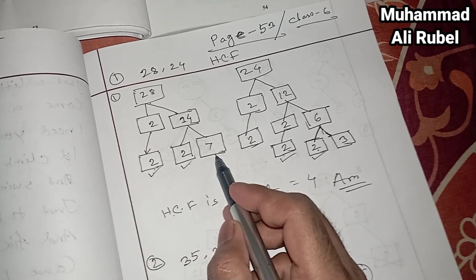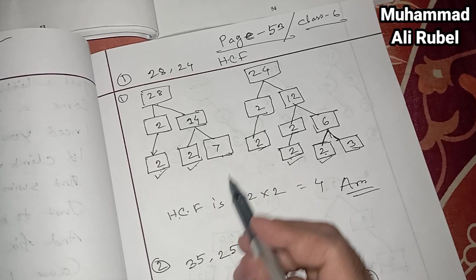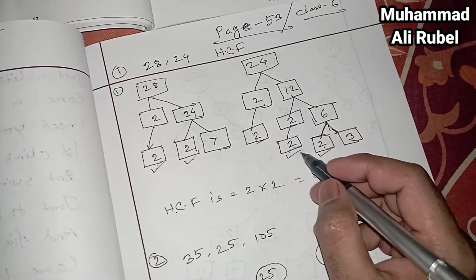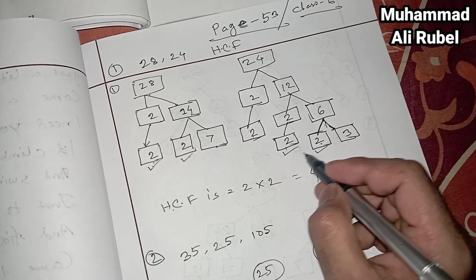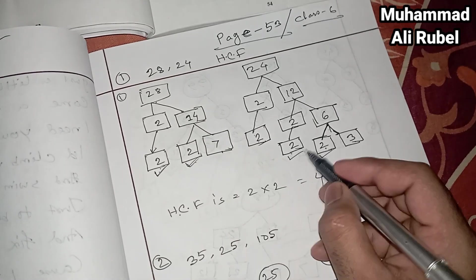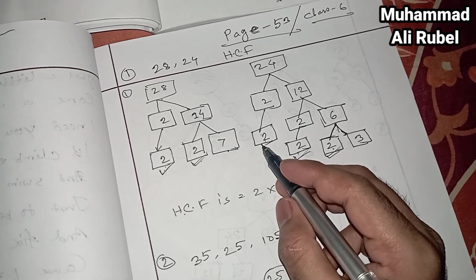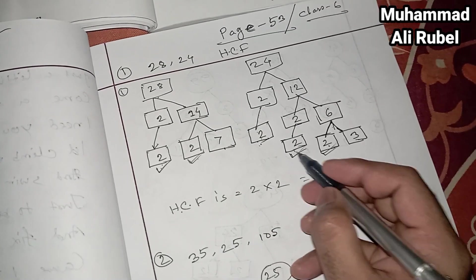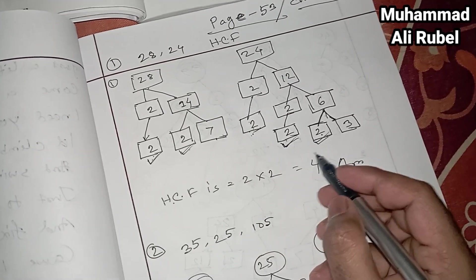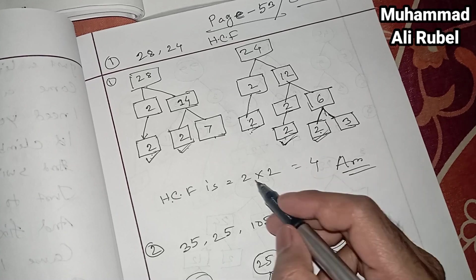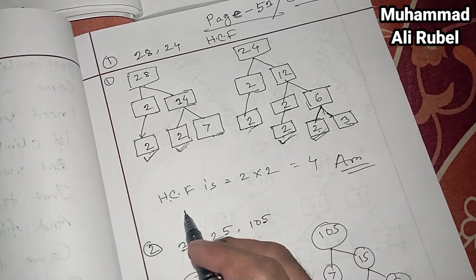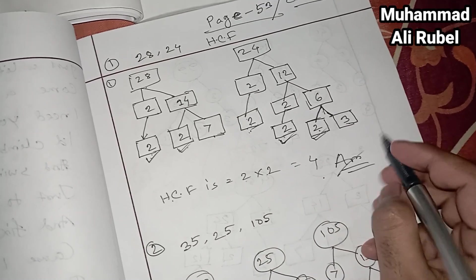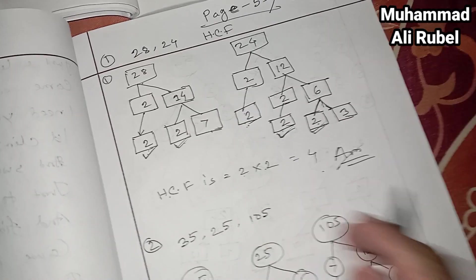For 28, the prime factors are 2, 2, and 7. For 24, the prime factors are 2, 2, and 2 and 3. We find the common numbers: 2 and 2. So 2 times 2 equals 4. The HCF is 4.